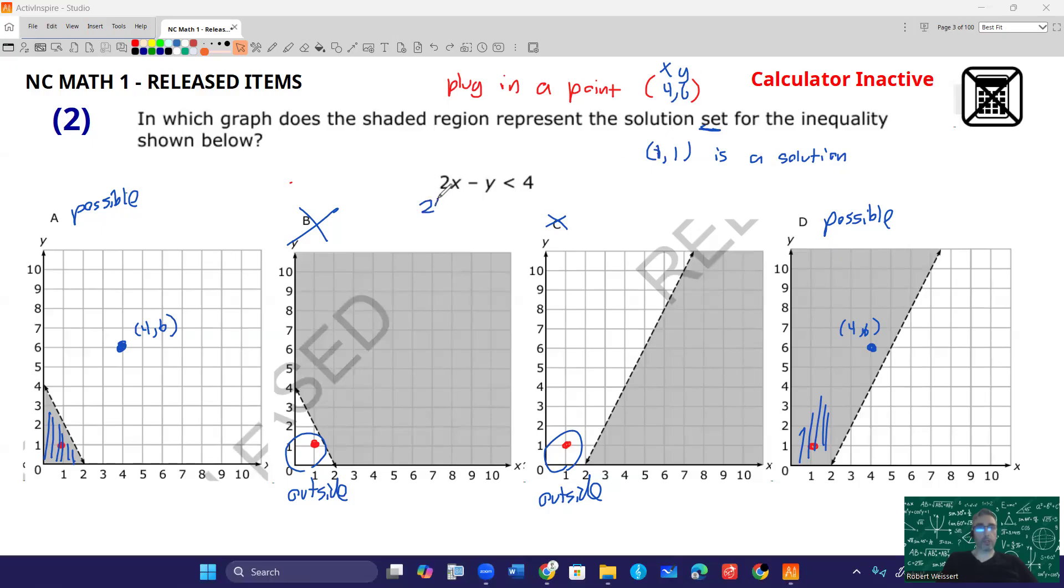So we're going to plug in that point, 4-6. So 2 times 4 minus 6 is less than 4. 2 times 4 is 8. 8 minus 6 is less than 4. 8 minus 6 is 2. 2 is less than 4. Therefore, 4-6, because it makes this inequality work, is a solution. 4-6 is a solution.